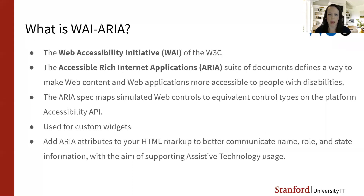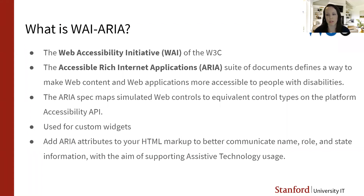What ARIA does is map simulated complex web controls to equivalent control types on your platform accessibility API. This is something you use when you're creating custom widgets — things where you might not have a native HTML element that does what you want. So you add ARIA attributes to your HTML markup to help better communicate the control's name, role, and state information to the browser and the accessibility API, with the aim of supporting users with disabilities who are using assistive technology.